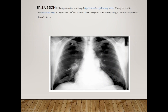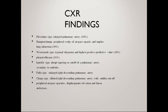Palla sign is an enlarged right descending pulmonary artery. Summary of chest radiograph findings: Fleischner sign means enlarged pulmonary artery; Hampton's hump is the peripheral wedge-shaped air space opacity implying lung infarction; Westermark's sign is variation in oligemia seen as a hyperlucent area; pleural effusion may also be present. Knuckle sign is abrupt tapering or cut-off of the pulmonary artery secondary to embolus. Palla sign is an enlarged right descending pulmonary artery. Combination findings include dilated right descending pulmonary artery with sudden cut-off, peripheral air space opacities, diaphragmatic elevation, and linear atelectasis.